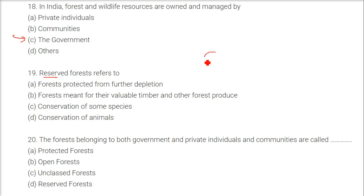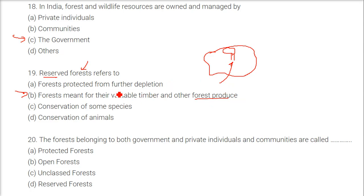Reserved forest refers to forests meant for their valuable timber and other forest produce — that is why they are being reserved. The forests belonging to both government and private individuals and communities are called unclassed forests.